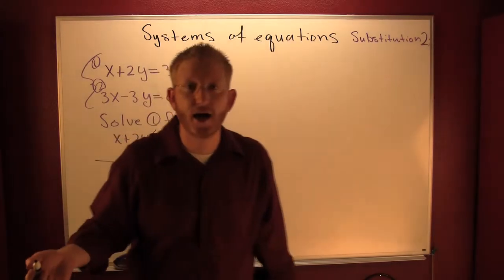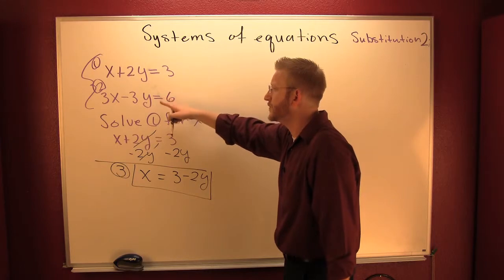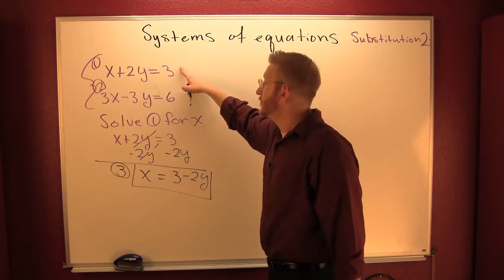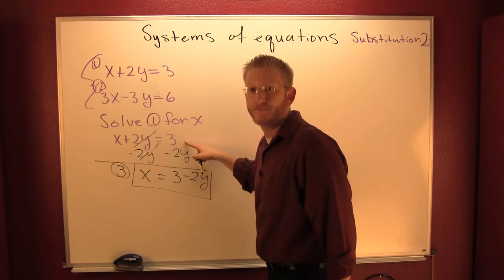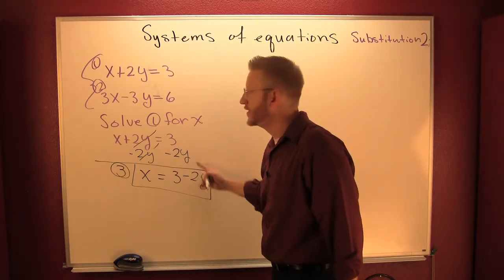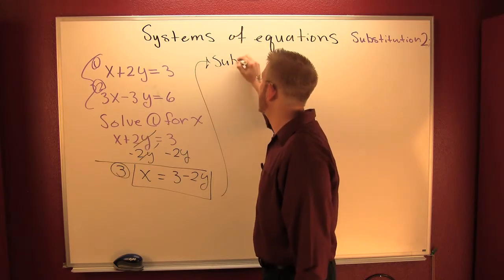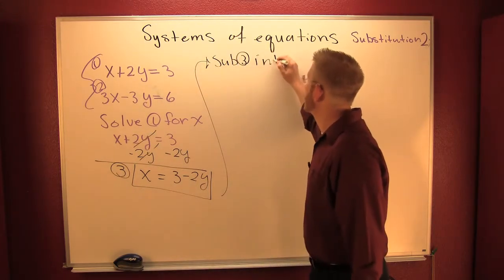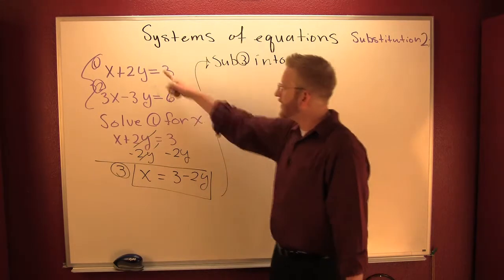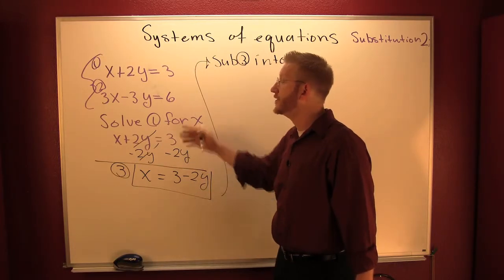Why did I do that? Because I wanted to solve for a variable so I can substitute it into the other. So am I gonna put it into one or am I gonna put it into two? You're not listening. We solve for a variable and we take that result and we substitute it into the other. So now we need to take three sub into two. Because we solved one for X, we need to take that and substitute it into the other which is two.